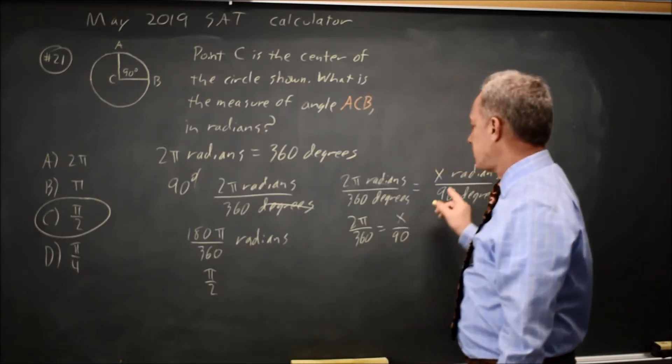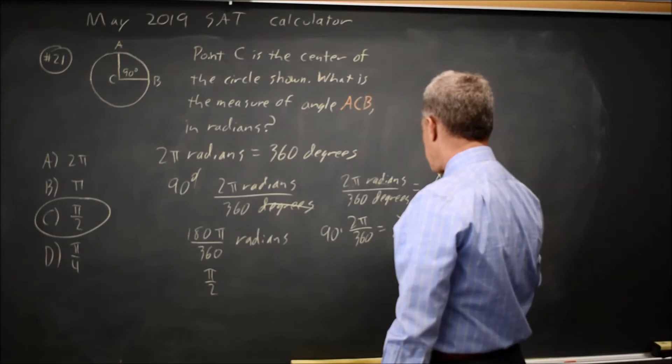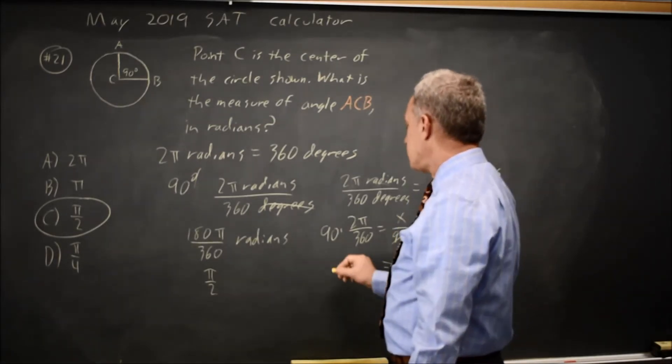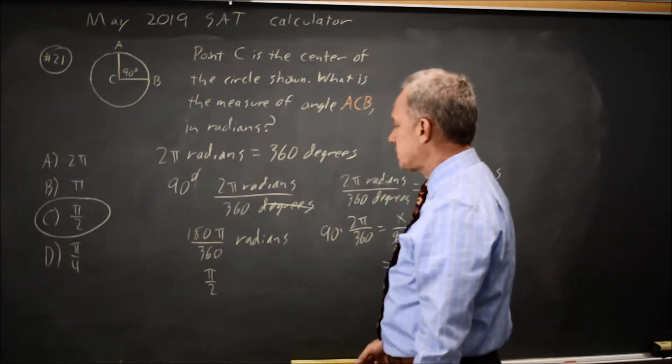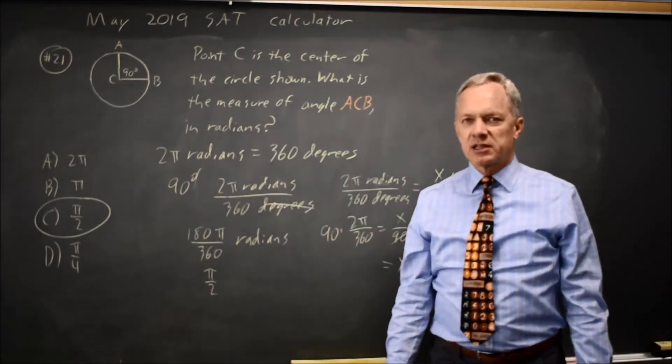And I'm trying to solve for x, the number of radians. So multiply both sides by 90. 90 over 90 is 1. So I'm left with x equals 90 times 2 pi over 360, which is the same thing I had over here. It's just a different way of looking at the same process.